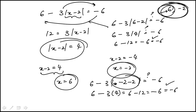So the answers are 6 and minus 2. You have to read the answer choices carefully because they also have ones with the flipped sign — that's choice D. But the correct answer here is C.